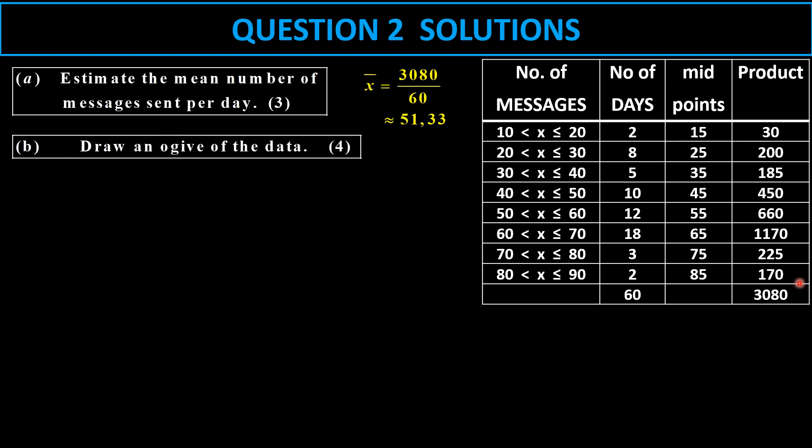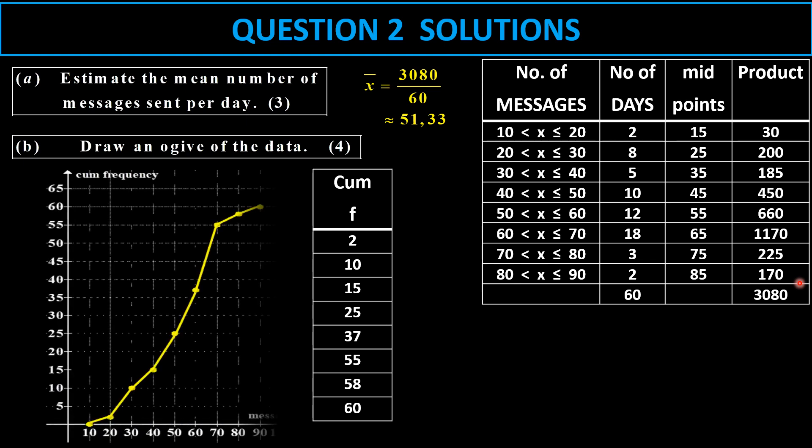Next, we are needing to get the ogive. And for the ogive, we need the cumulative frequencies. There's our cumulative frequencies. And then we can plot the points and then join the line.